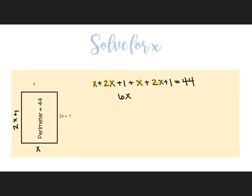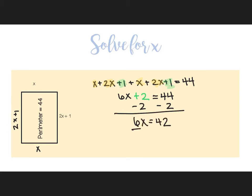Positive 1 plus 1 plus 1 plus 1 equals plus 4 equals 44. Subtract 2 from both sides. 6x equals 42. Divide by 6. x equals 7.